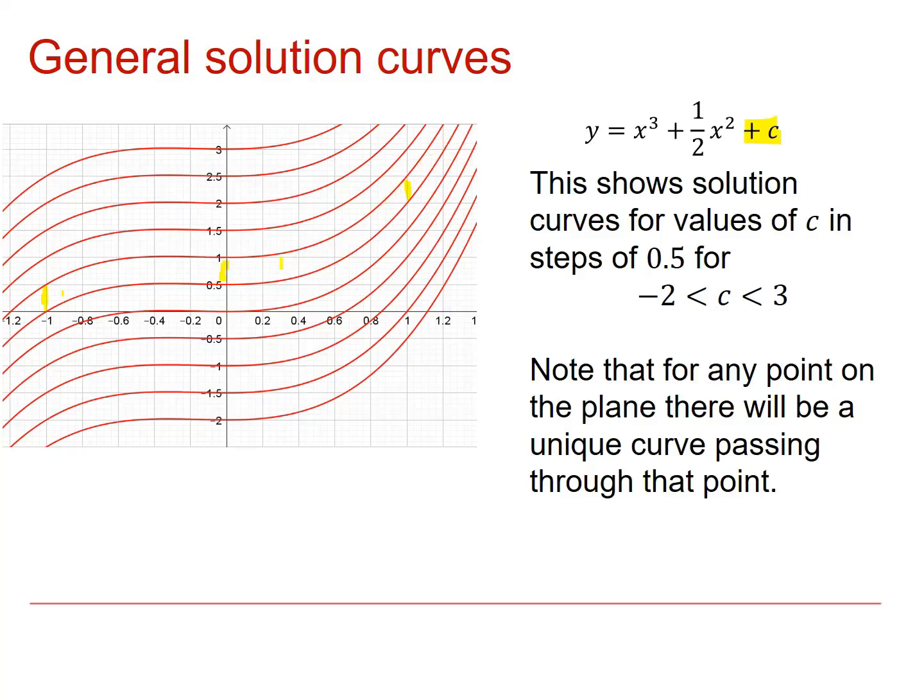These curves are not parallel. They are always separated by a vertical distance of 0.5. This family of curves represents c values that are allowed to vary between minus 2 and 3 in steps of a half.